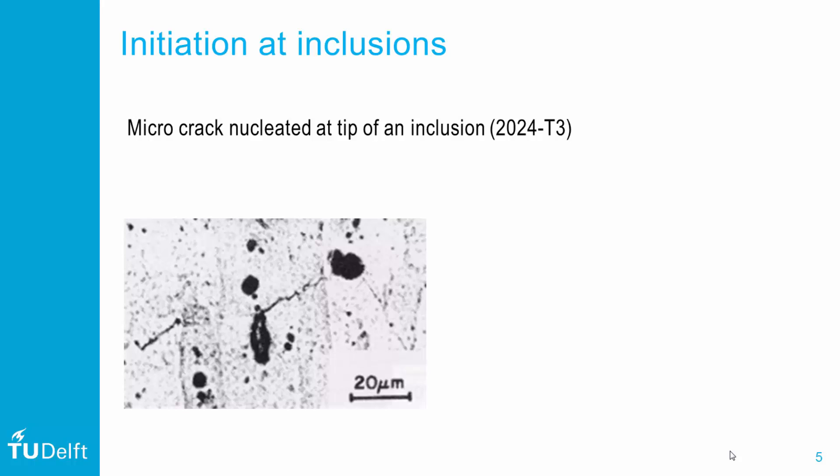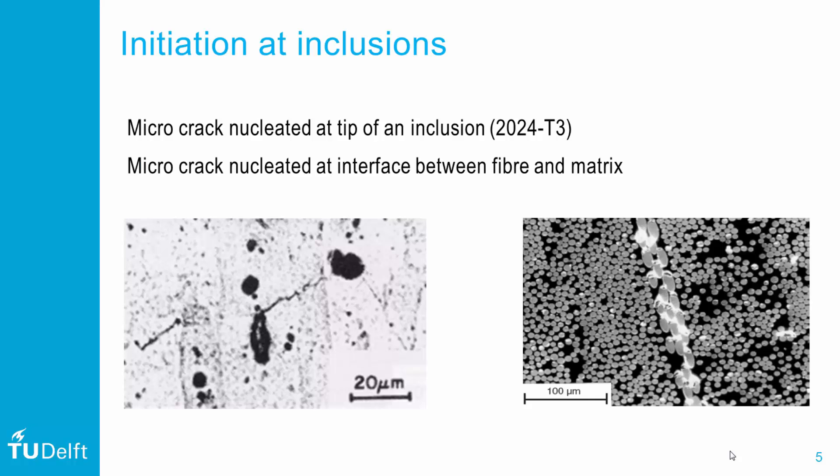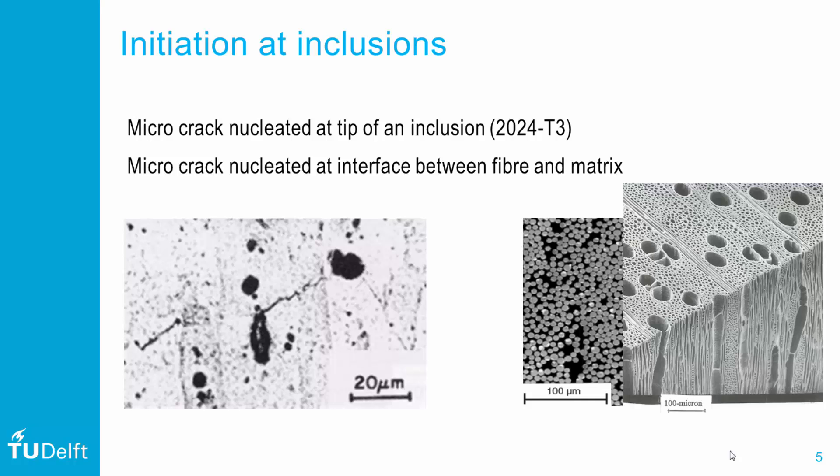The nucleation of microcracks may be easier at the free surface of a material because of fewer constraints, but often microcracks nucleate at inclusions in the material. In particular, inclusions form a microlevel stress concentration from which a microscopic crack may nucleate. This stress concentration is similar for any inhomogeneous material — the difference between fiber and matrix properties may initiate a crack, but also the open structure of wood or voids present in the material may form a nucleation site.